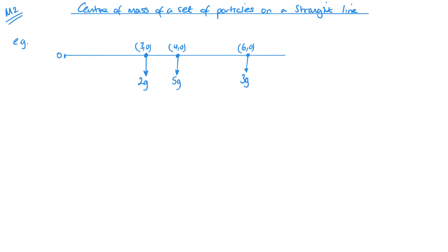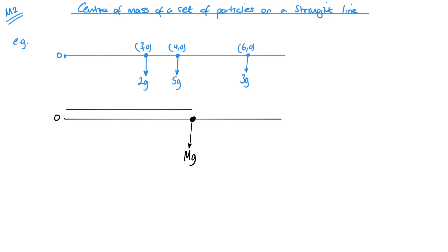We want to replace this by a single mass — hence center of mass. It's going to be acting at some point from the origin, capital M, G, and the distance to that point is just an average distance x-bar. On a straight line like this, a horizontal line, we don't have to worry about y values — we only need to think about the x values. We're going to create two equations. My total mass here cannot change.